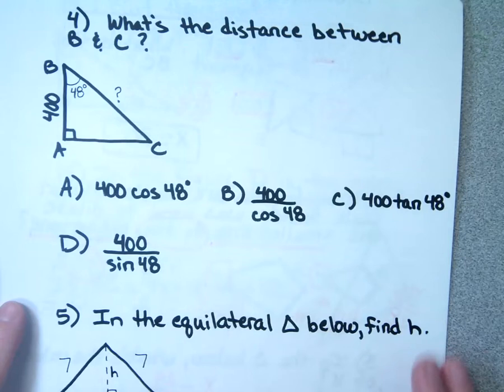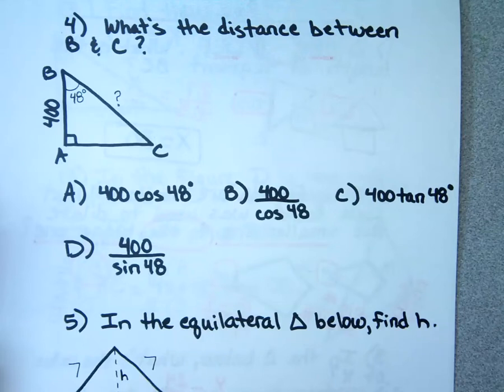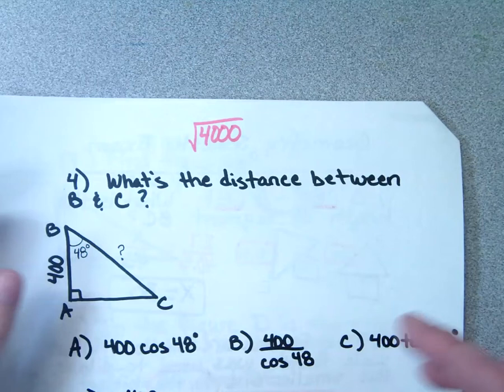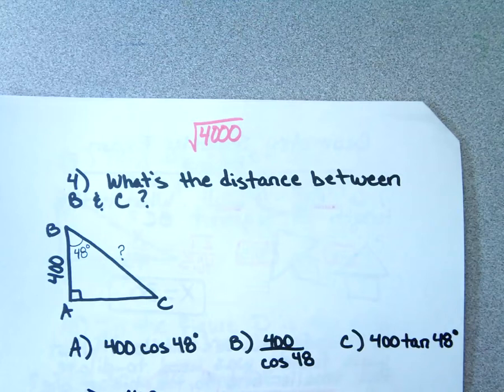So now we get into a lot of what your test was about yesterday. Some of you, because I had to grade some tests by hand, it seemed like you knew what you were doing but couldn't quite get the answer. There was a question where you got down to the square root of 4,000, which was correct, but some people couldn't simplify it into simplest radical form using perfect squares. Let's look at number 4.